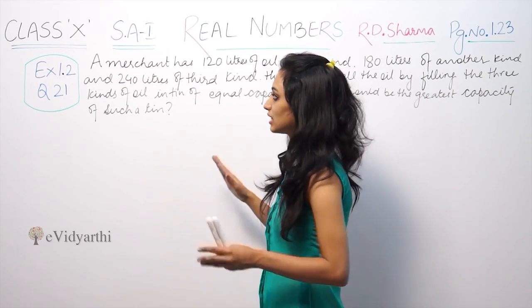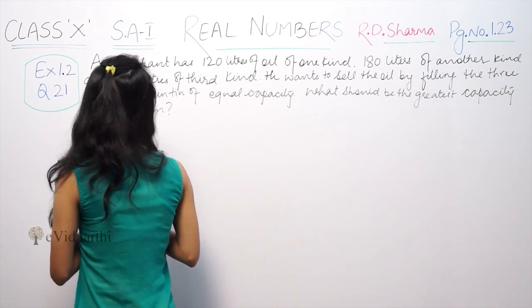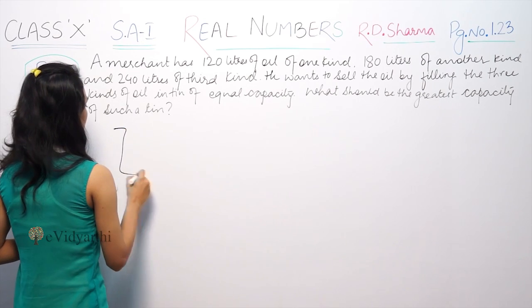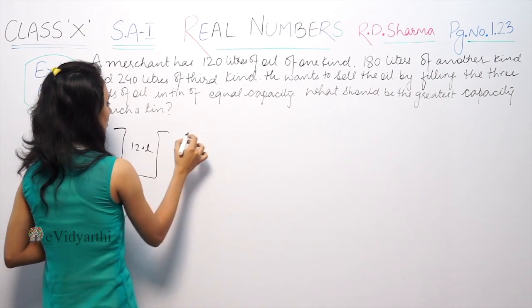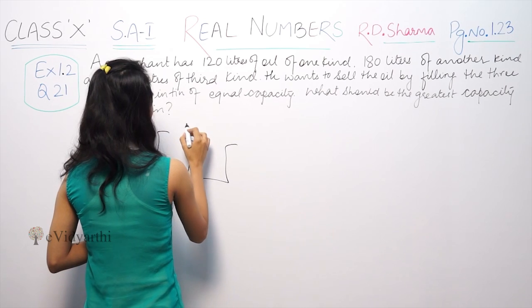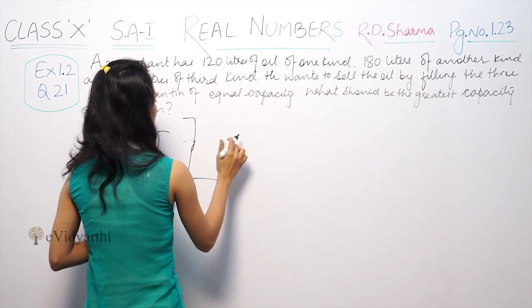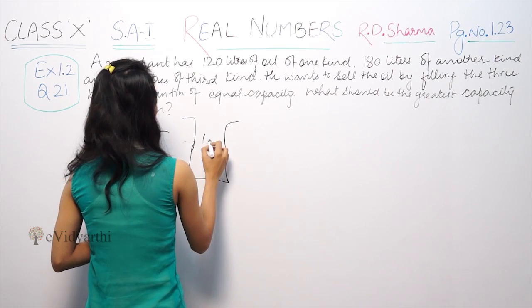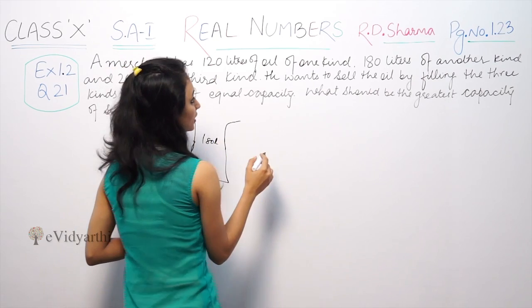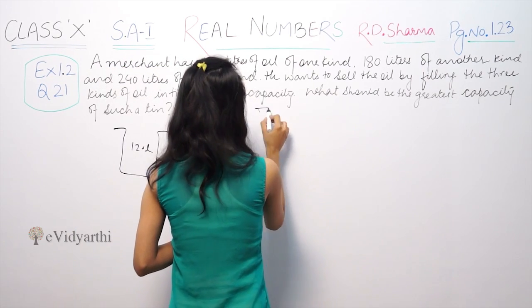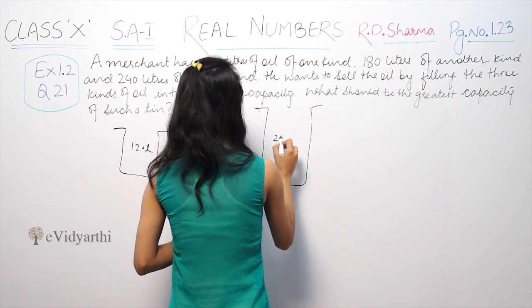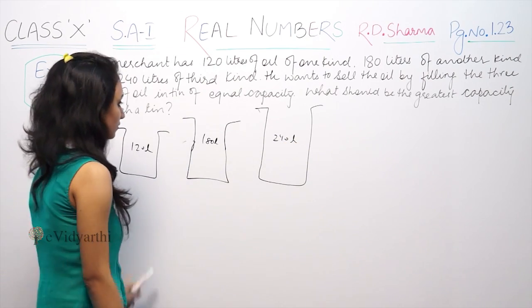So the merchant has three oil containers. First: 120 liters capacity. Second: 180 liters. And the third capacity is 240 liters.